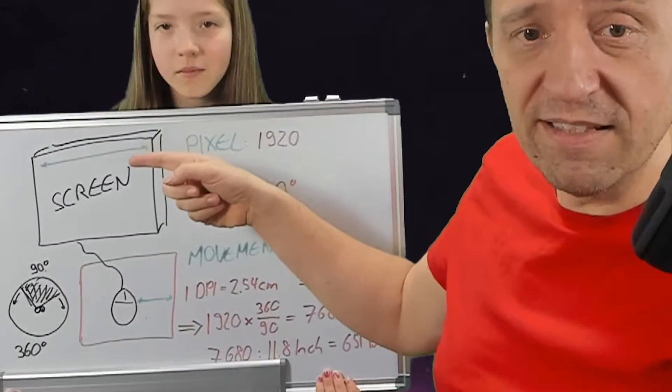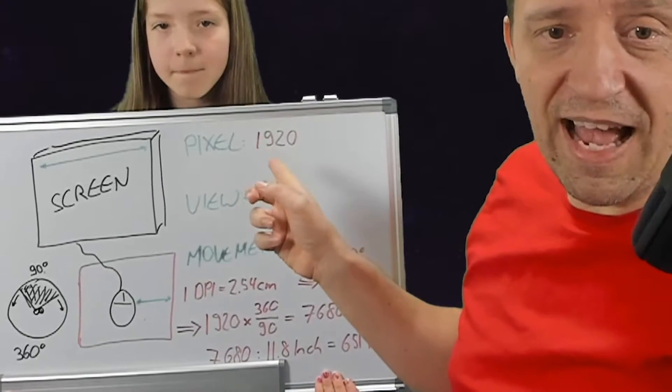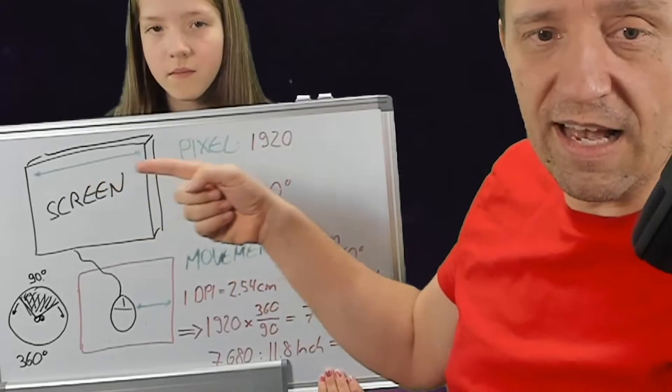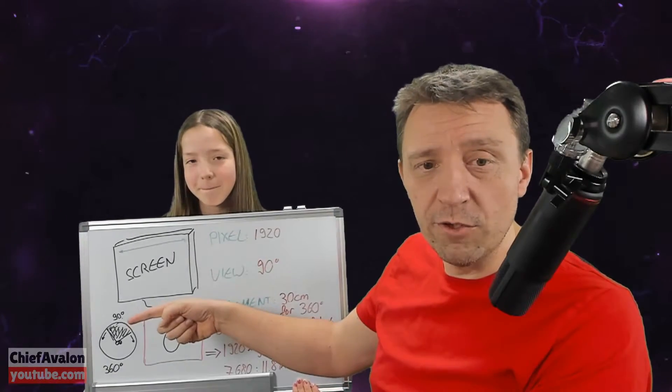First, the screen pixel size, that is usually 1920 pixels. That's your screen size. The second thing is your view.